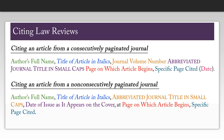At some point, you may be required to cite a law review, which is a legal version of an academic journal. There are two basic types: those that are consecutively paginated and those that are non-consecutively paginated.